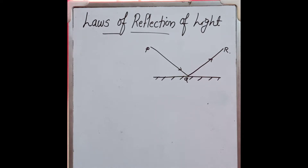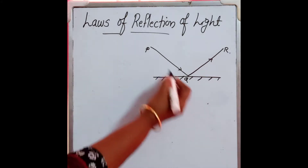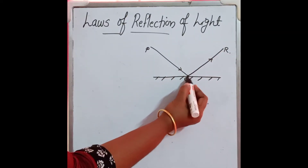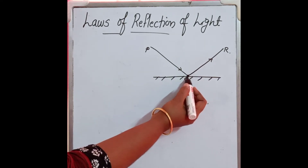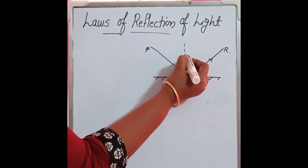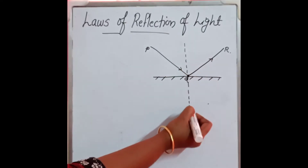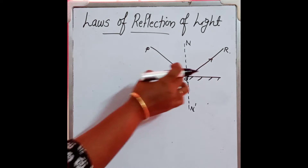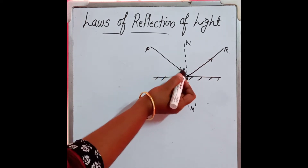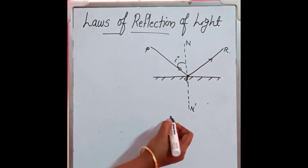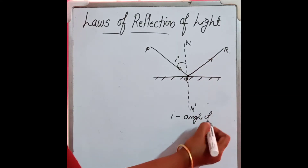There are some laws related to the reflection of light. Before that, when PQ, the ray of light, falls on the mirror, it will get reflected, and Q is called the point of incidence. At the point of incidence, when you draw a normal using a protractor, draw a normal at Q. This dotted line we name N-N'. This represents the normal on the surface. The angle formed between this normal and the incident ray is called angle I — the angle of incidence.